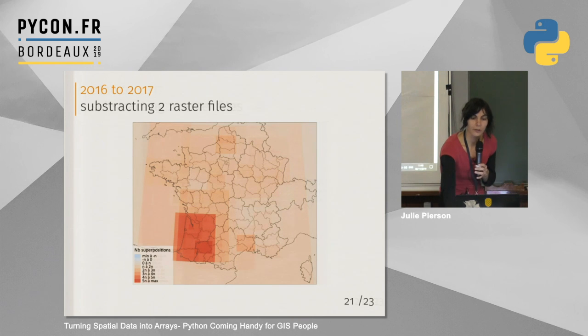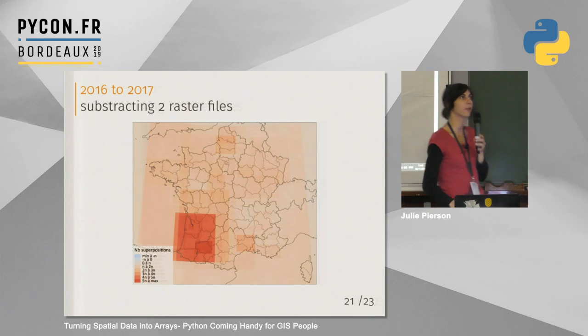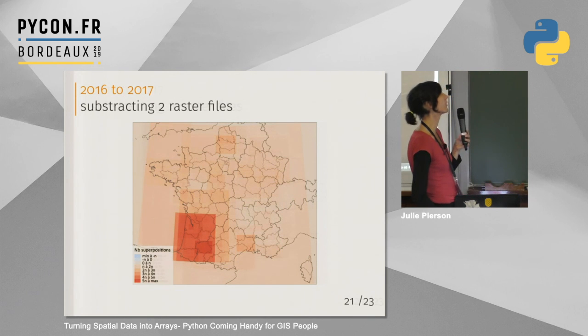I could produce another file. I used hot colors for increases in the superposition number of extents, and cold colors for decreases. On this particular map, you can only see increases.